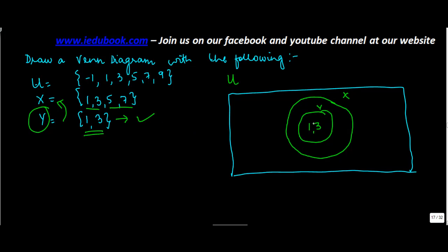Now what does X contain beyond Y? It contains 5 and 7. So you put 5 and 7 in the region which is within X but outside Y.